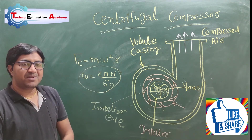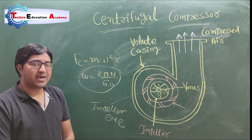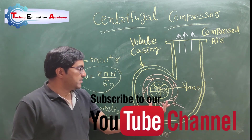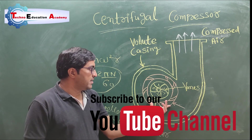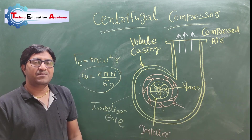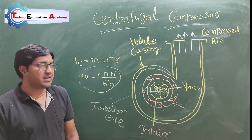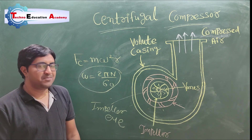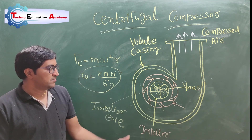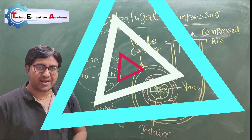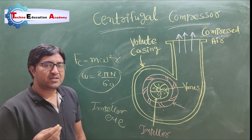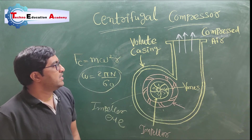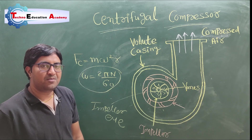This is the working principle of centrifugal air compressor. Generally the speed of the impeller is 20,000 RPM to 30,000 RPM. The application of the centrifugal air compressor is for delivering a large quantity of air at low pressure.